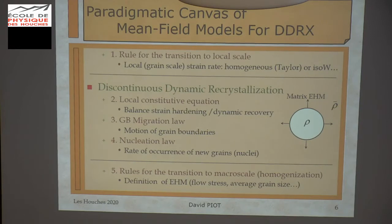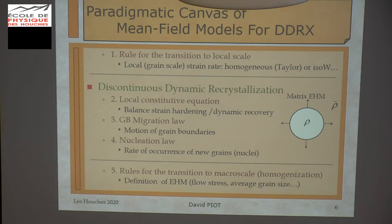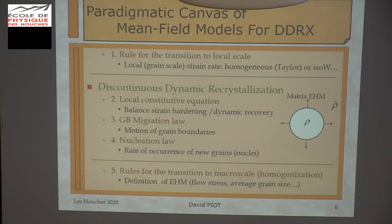Coming back to the paradigmatic canvas of mean field models for dynamic recrystallization: the first thing is not due to recrystallization, it's a question of the local description of the boundary condition. We need the strain rate in each grain. We use the simple Taylor assumption — it means that the strain rate is homogeneous — but it's possible to use whatever you want here, for example a Sachs or more complex model. For dynamic recrystallization, we need three equations for three main phenomena.